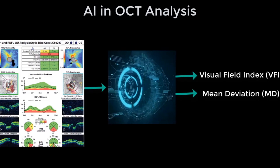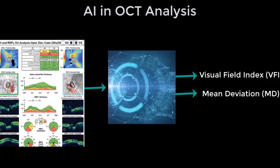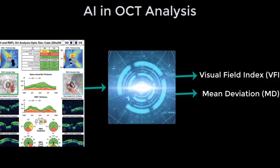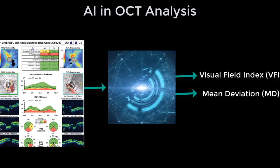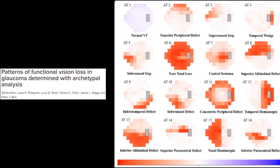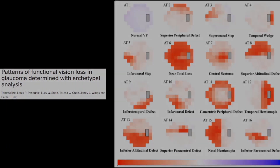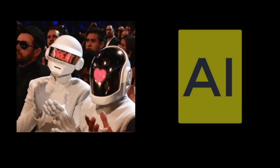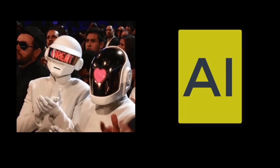It is possible to estimate visual field test results such as visual field index and mean deviation from raw optical coherence tomography data of healthy and glaucomatous eyes using the archetype analysis method, as developed by Els et al. It is exciting what AI can do that the human brain cannot.